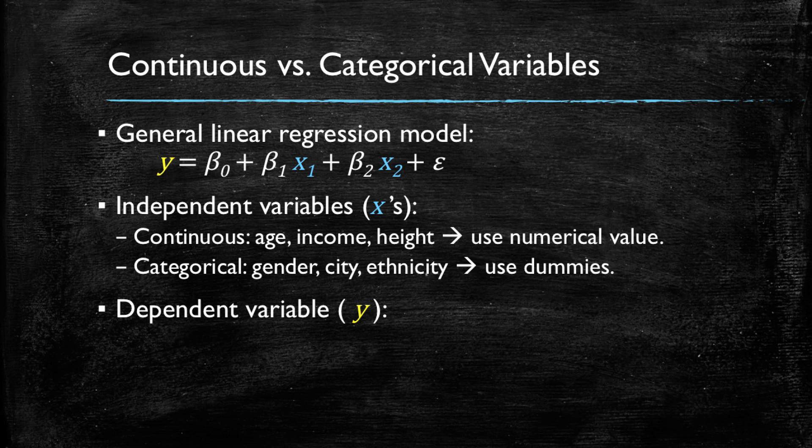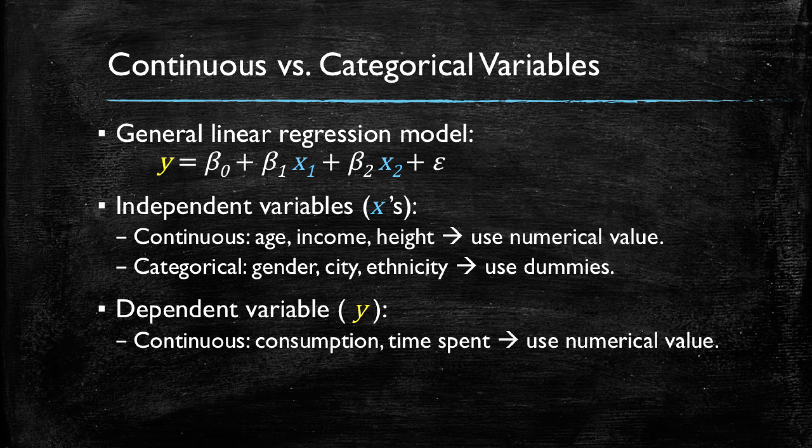On the other hand, we could also have various forms of dependent variables. For example, we could quantify, with numbers, how much does a customer spend or how much time does a customer spend at a store.